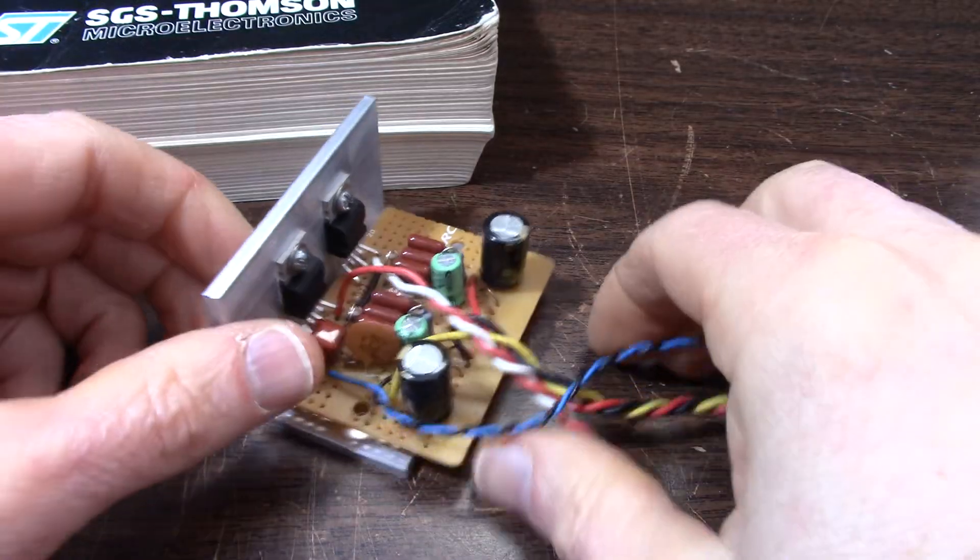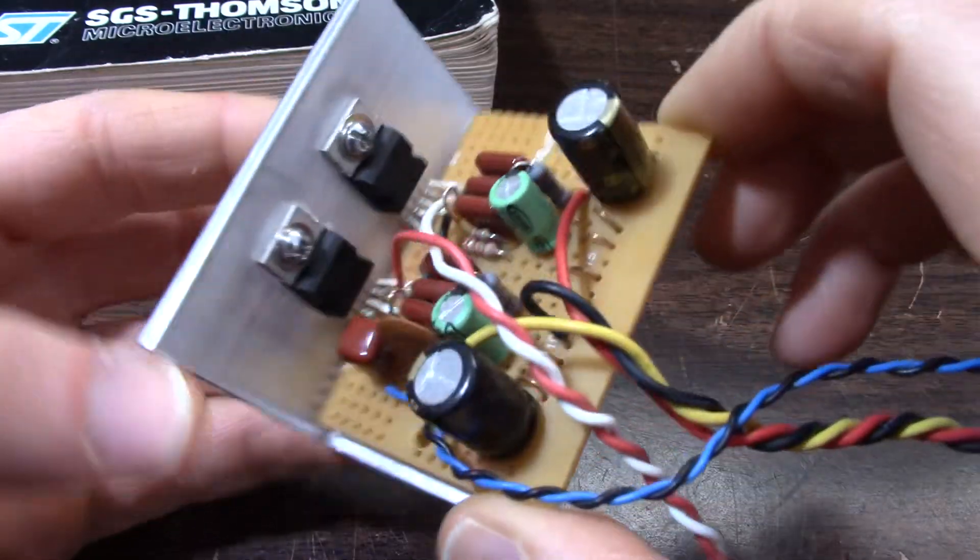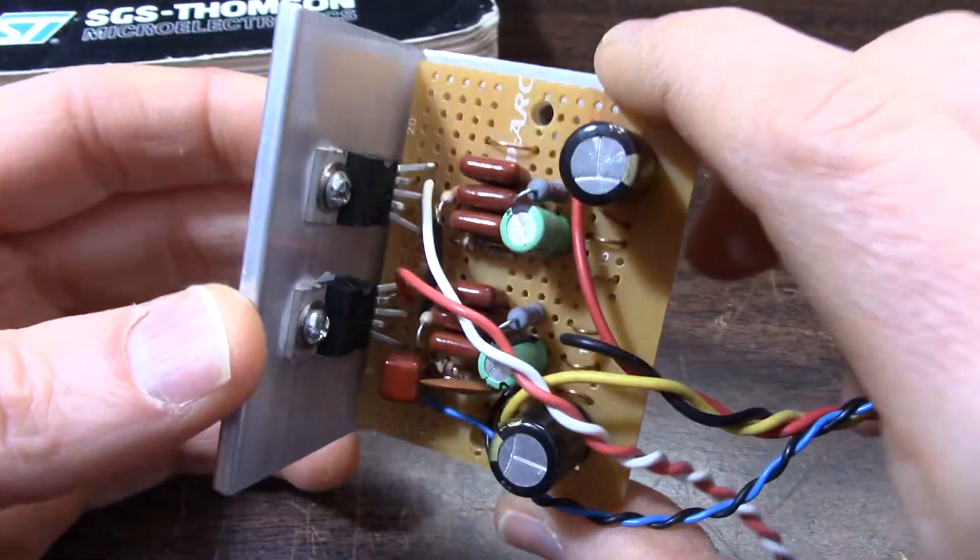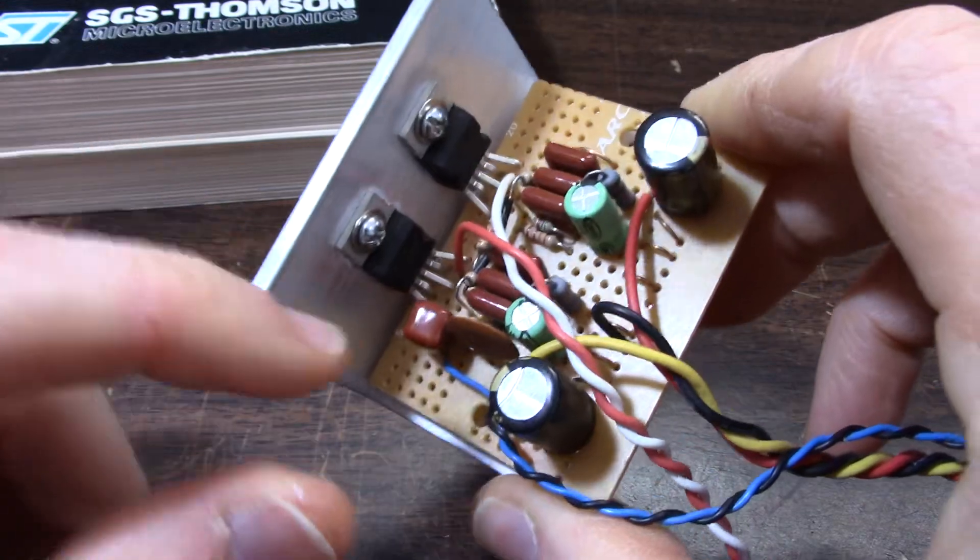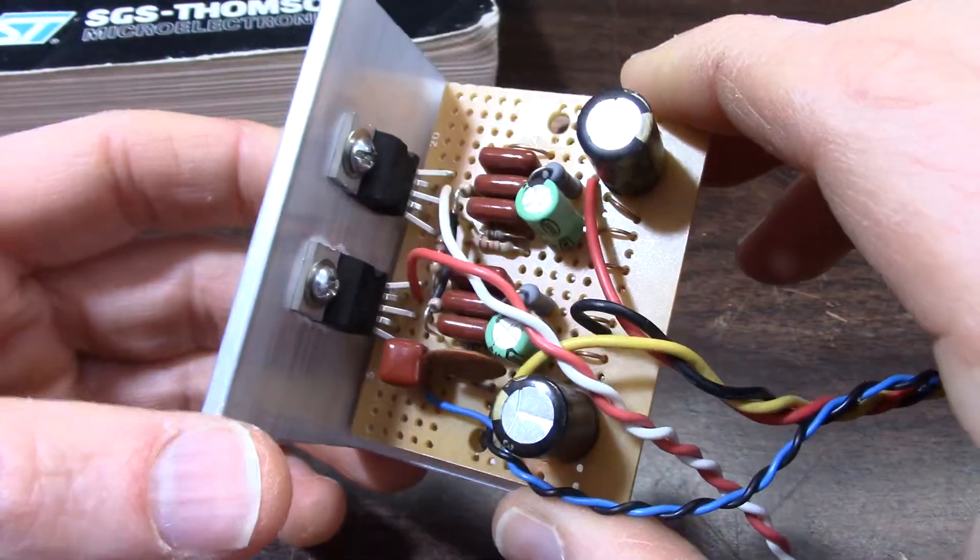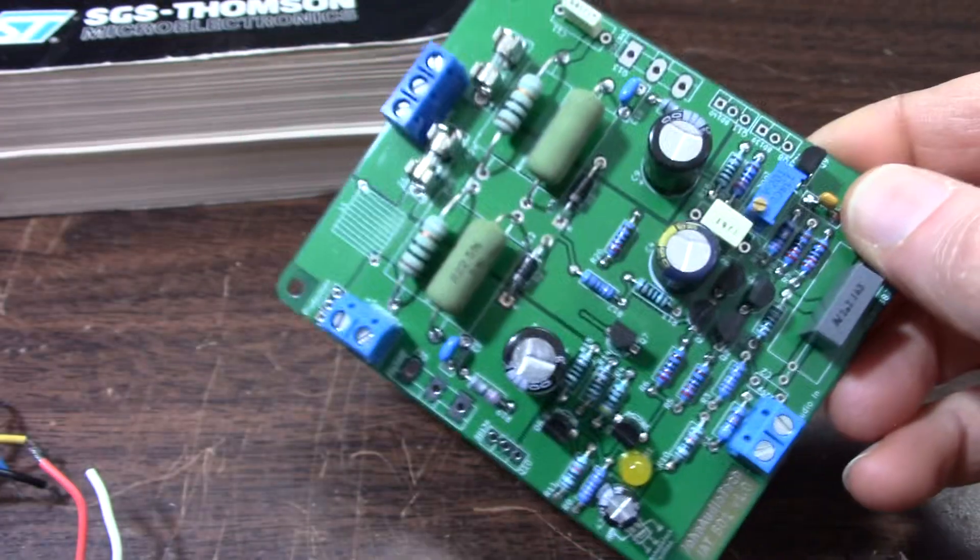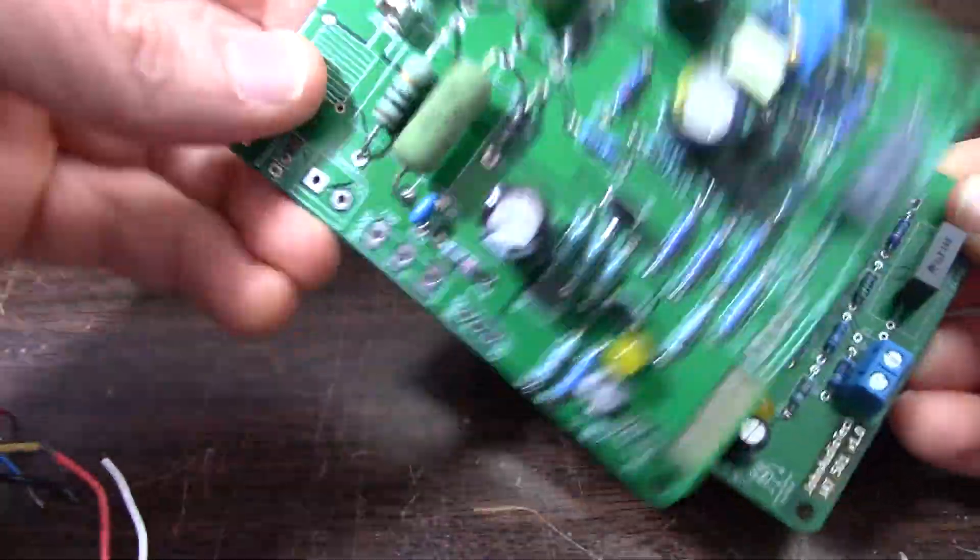Greetings everyone and welcome back to the bench. Today I have this amplifier board which is a bridged TDA 2050 pair. I'm going to convert them back into stereo, but first I'm working on the John Audio Tech boards here.